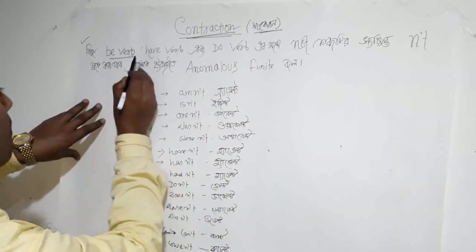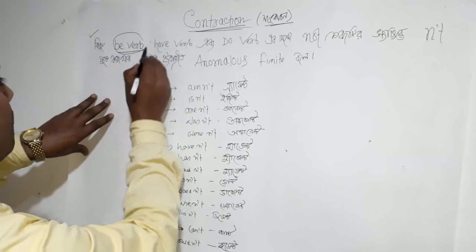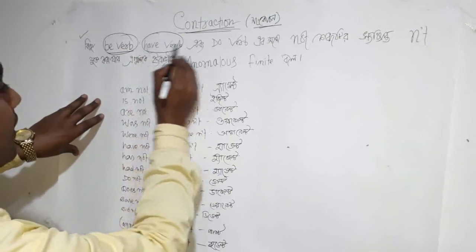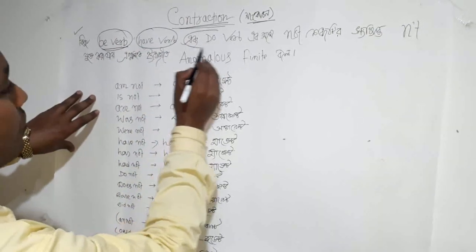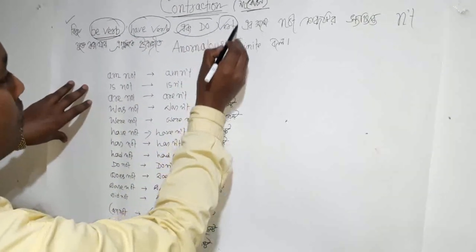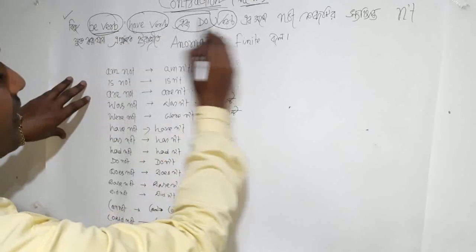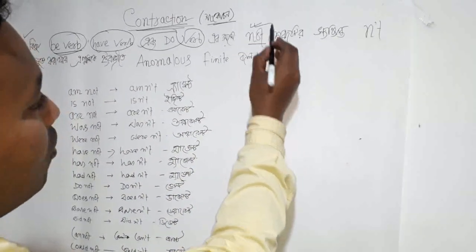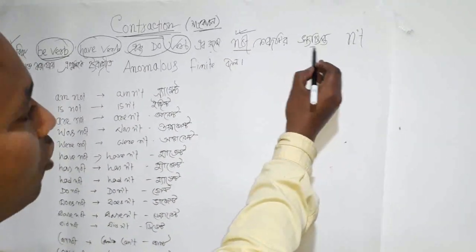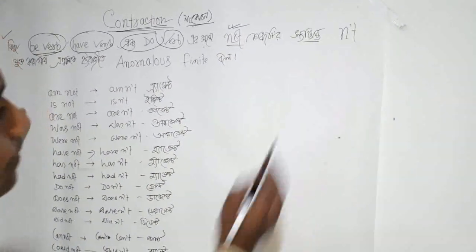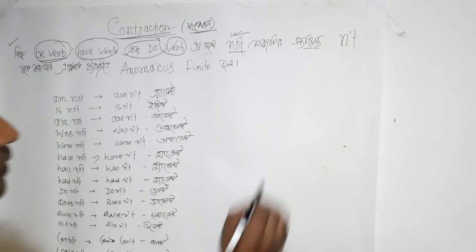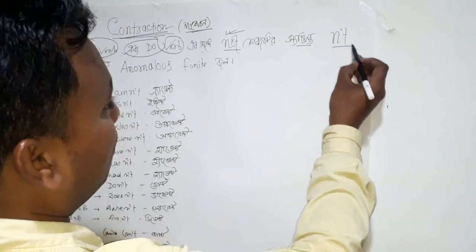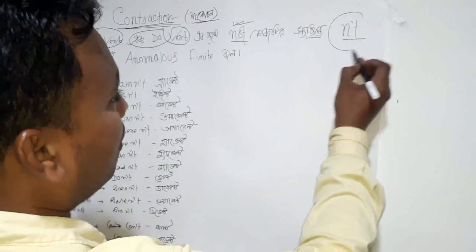This is the b-verb, which includes the have-verb and the do-verb. And this is a 'not' sentence — which means the form of a negative, or 'not' contraction.